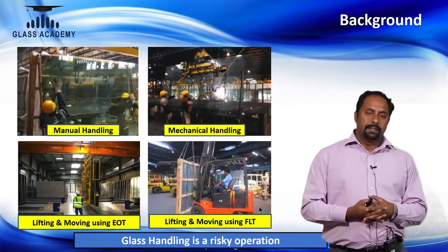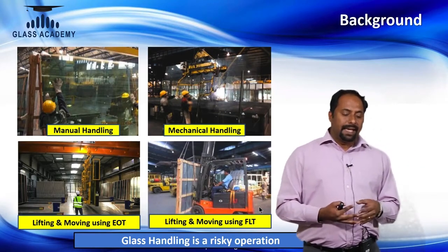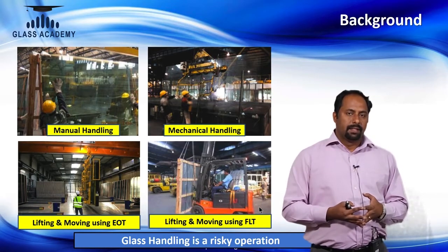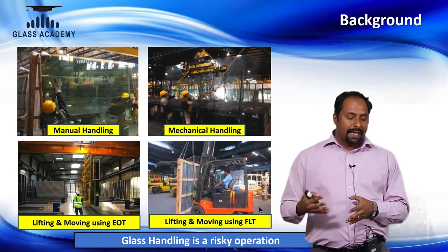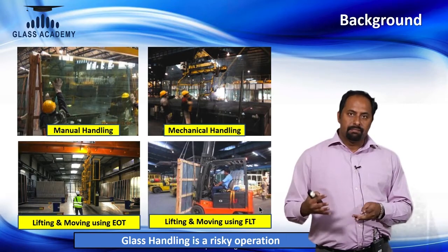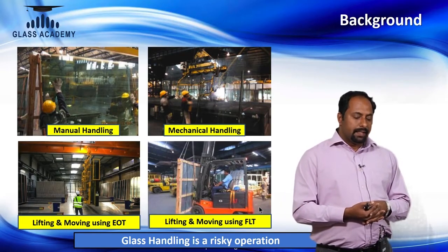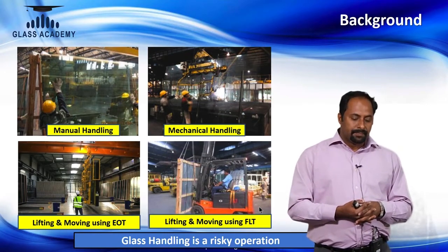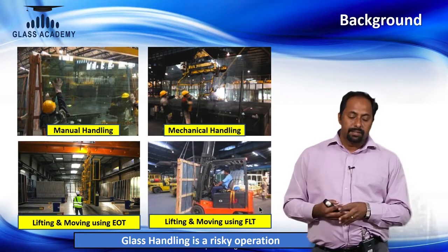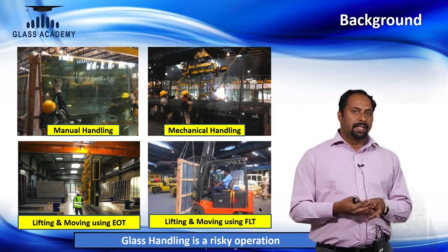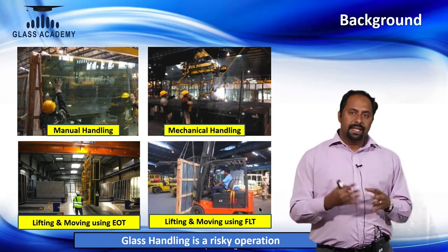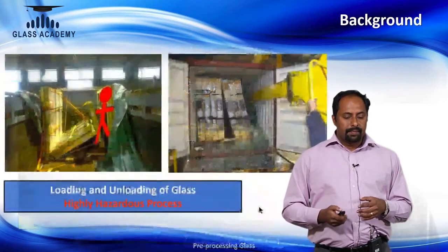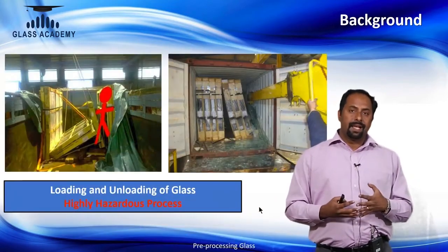In glass handling, there are four ways the material is handled. First, people handle glass manually. Second, there is mechanical handling using various mechanical equipment. Third, large glass sheets are lifted and moved using EOT cranes. Fourth, common material handling equipment like forklift trucks are used for glass in bundles. These are the different ways glass is handled, including during loading and unloading for transportation.